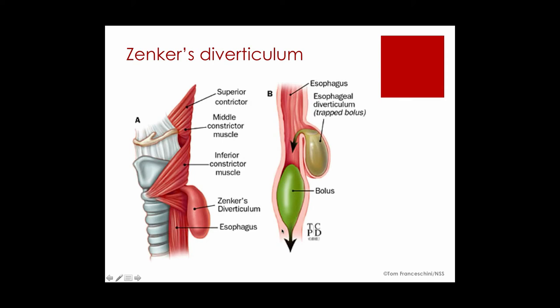A lateral diverticulum can stem from the same problem. You might have lower esophageal stricturing, or the lower esophagus not opening for some reason — like achalasia. There's constant pressure as boluses come down through the esophagus heading to the stomach, and finally it herniates as well. You can also have a traction lateral diverticulum, which occurs when an outside structure — usually through scar tissue — pulls and grabs onto the esophagus, and finally a weakened area gives way.